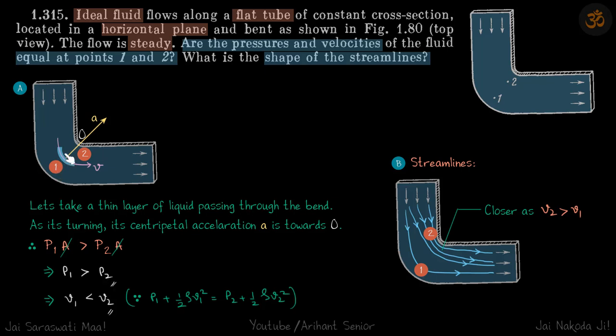Now if we use Bernoulli's equation at those two points, we can say v1 is less than v2. So that is the first part. The second part is the shape of streamlines.